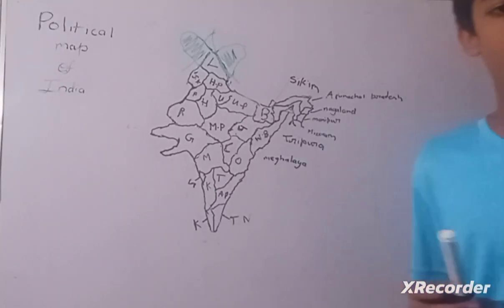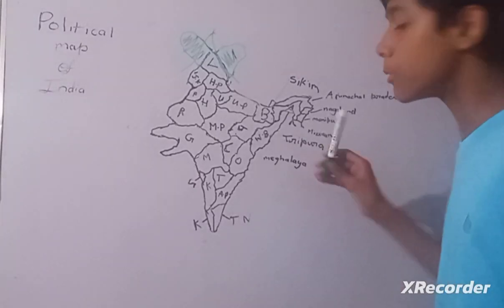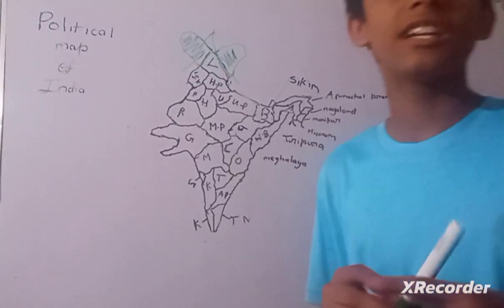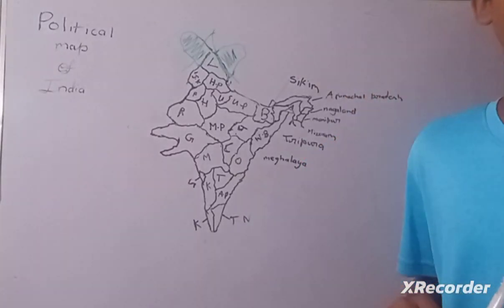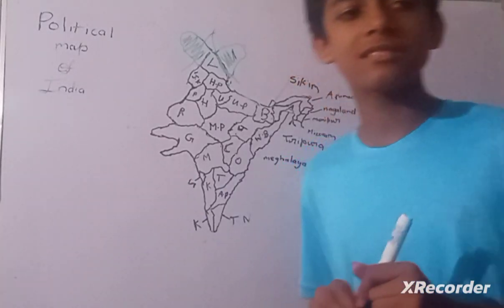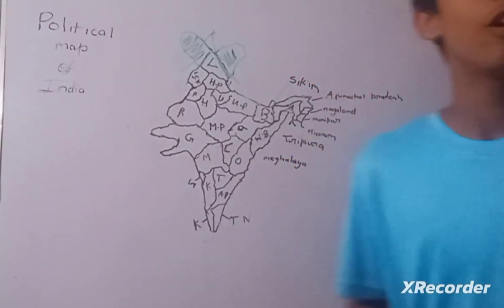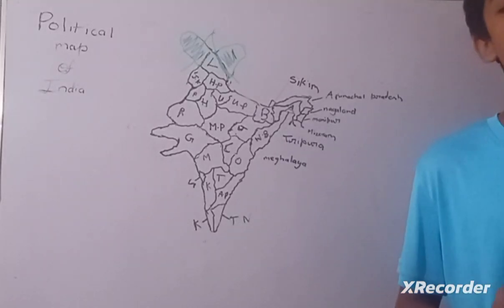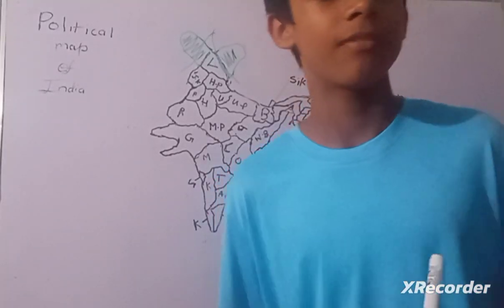And Maharashtra's capital is Mumbai. And now Chhattisgarh is famous for hill plateaus, rock paintings, and capital is Raipur. Now Orissa. Orissa was earlier known as Odisha but now it's changed as Orissa. Orissa is famous for tribal culture and Jagannath Temple, and its capital is Bhubaneswar.